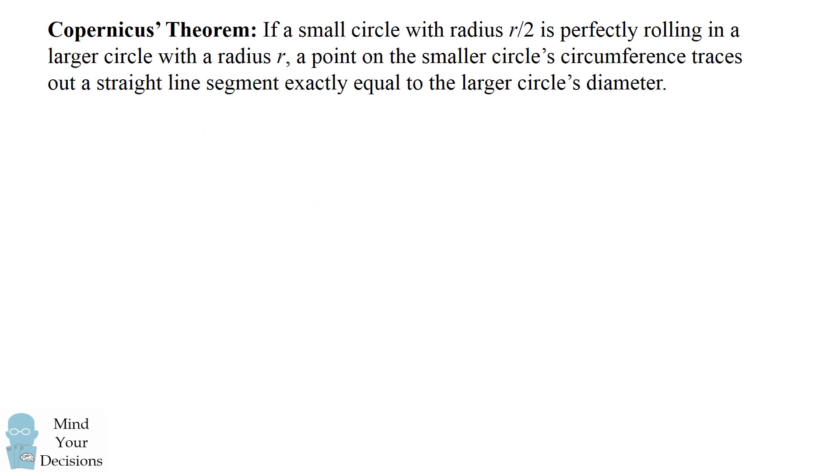This is known as Copernicus's theorem. If a small circle with radius r/2 is perfectly rolling in a large circle with radius r, a point on the smaller circle's circumference traces out a straight line segment exactly equal to the larger circle's diameter.